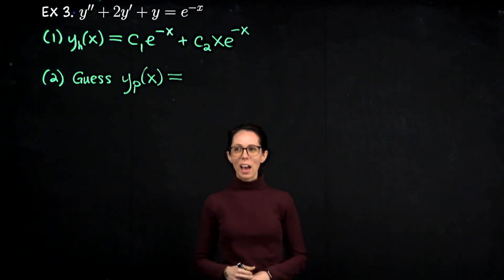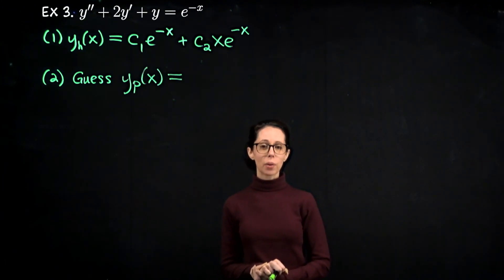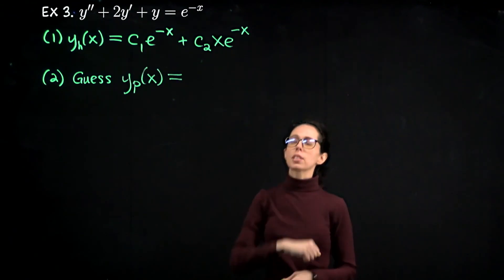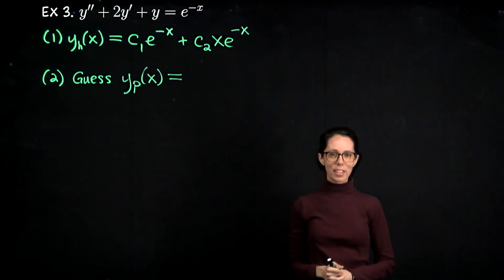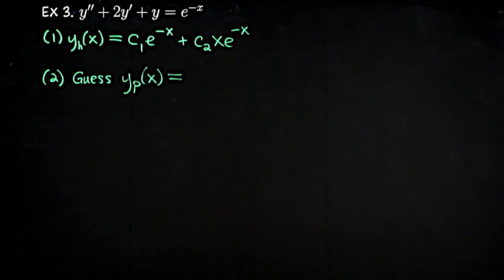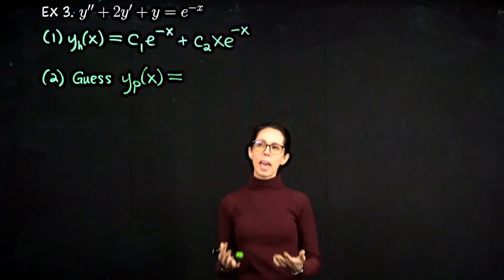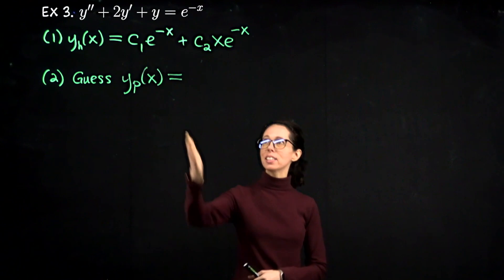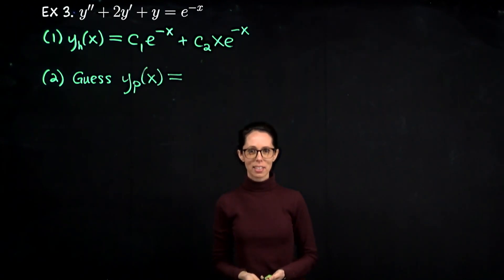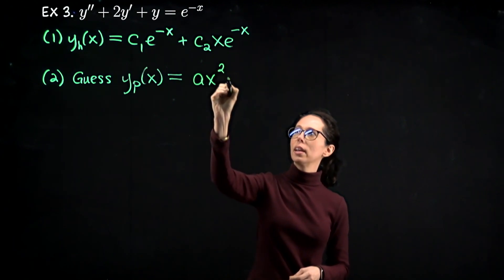Let's look at this third example. The characteristic equation has only one root, r = −1, and it's repeated. That means the homogeneous solution is c1·e^(−x) + c2·x·e^(−x), where one fundamental solution picks up the coefficient x. Looking at the forcing function: if the root were not −1, we'd guess A·e^(−x). But e^(−x) is already in the homogeneous solution. So we'd try Ax·e^(−x) — but that's already there too. So we drop another x in front and try Ax²·e^(−x).